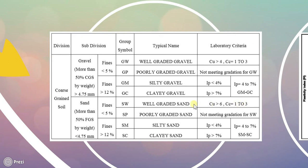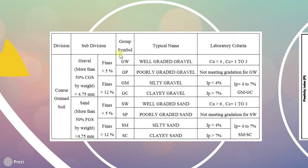If fines are greater than 12% in sand then it will be silty sand (SM) or clay sand (SC). Their laboratory criteria: if IP is less than 4% it is silty sand (SM); if IP is greater than 7% it is clay sand (SC); and if IP is between 4 to 7% it is SM-SC, which is the in-between criteria of silty sand and clay sand. So this was all about coarse-grained soils.